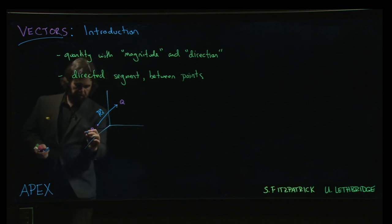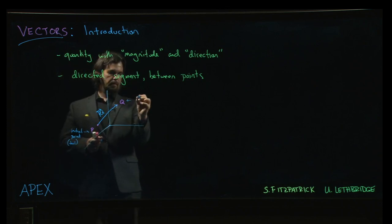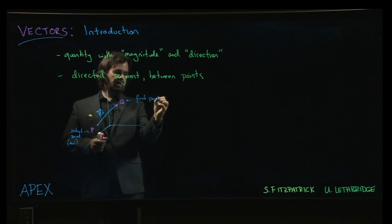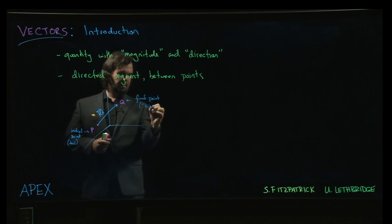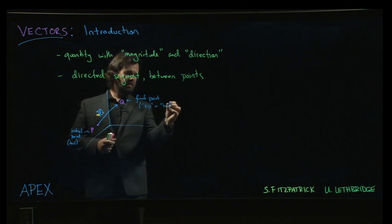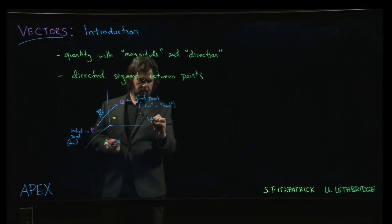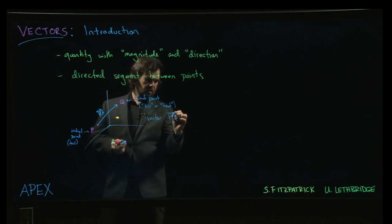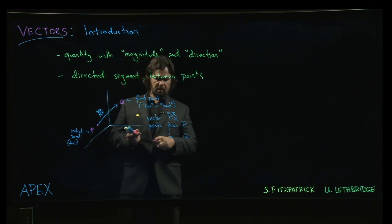So in this setup here this point P would be known as your initial point of the vector or sometimes the tail of the vector. Q the final point or you might say terminal point if you want to sound a little bit fancier, and you might also refer to this as the tip or the head of the vector. And so we think of this vector PQ and it points from P to Q. That's the convention that we want to have in mind for this.